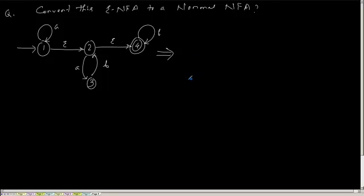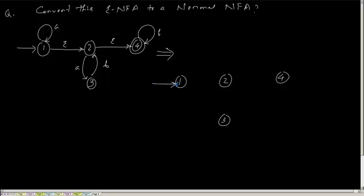For the newly created NFA, the set of states will remain the same: {1, 2, 3, 4}. The alphabet set remains the same: {a, b}. The starting state is still 1, and the final states will be {1, 4}. Now I have to create the transitions.